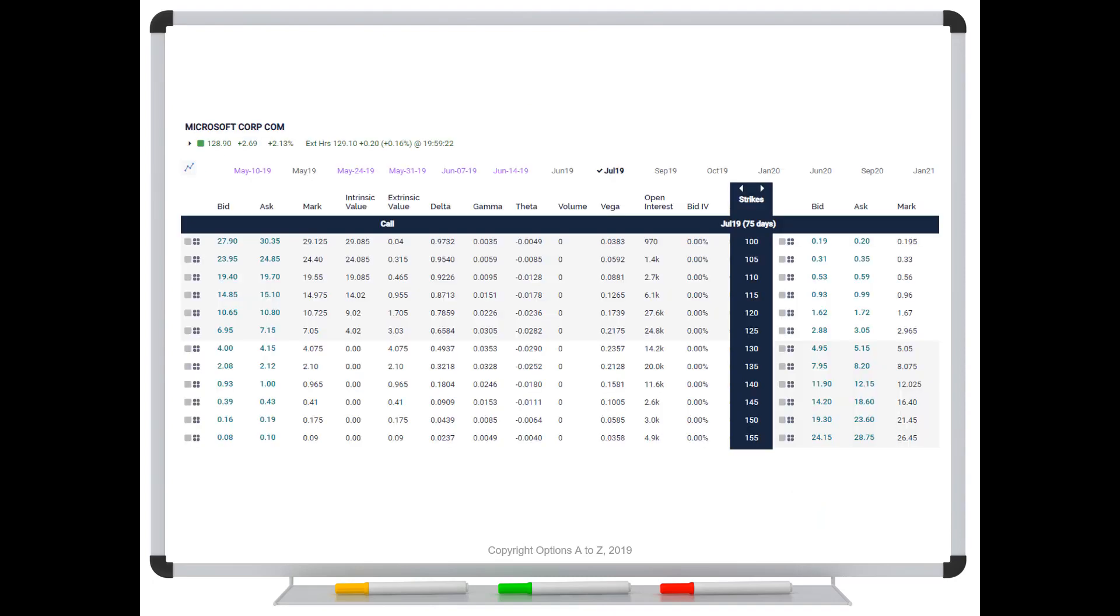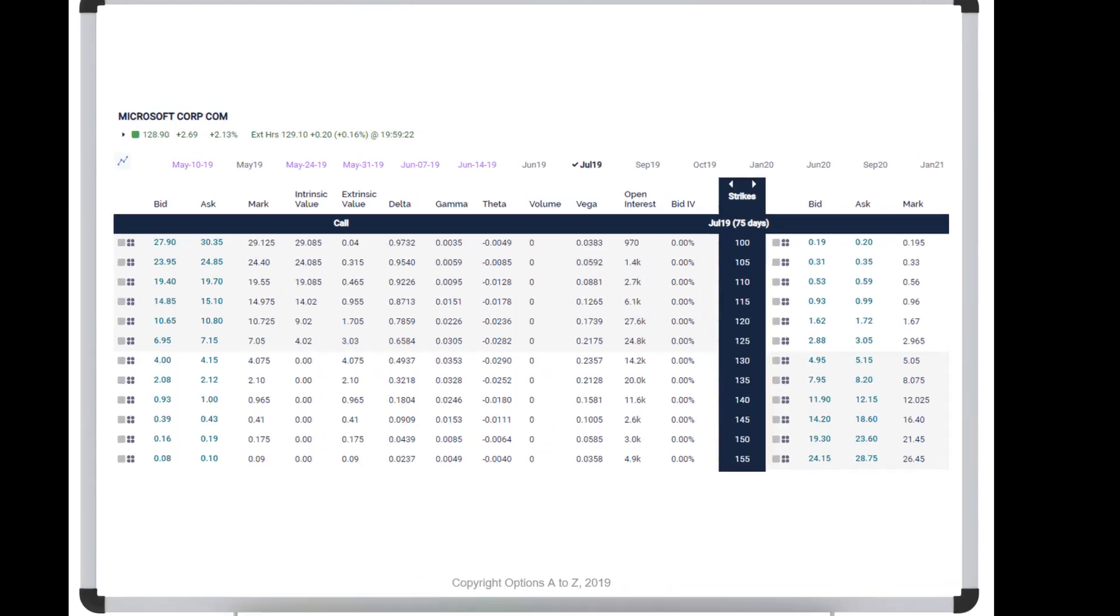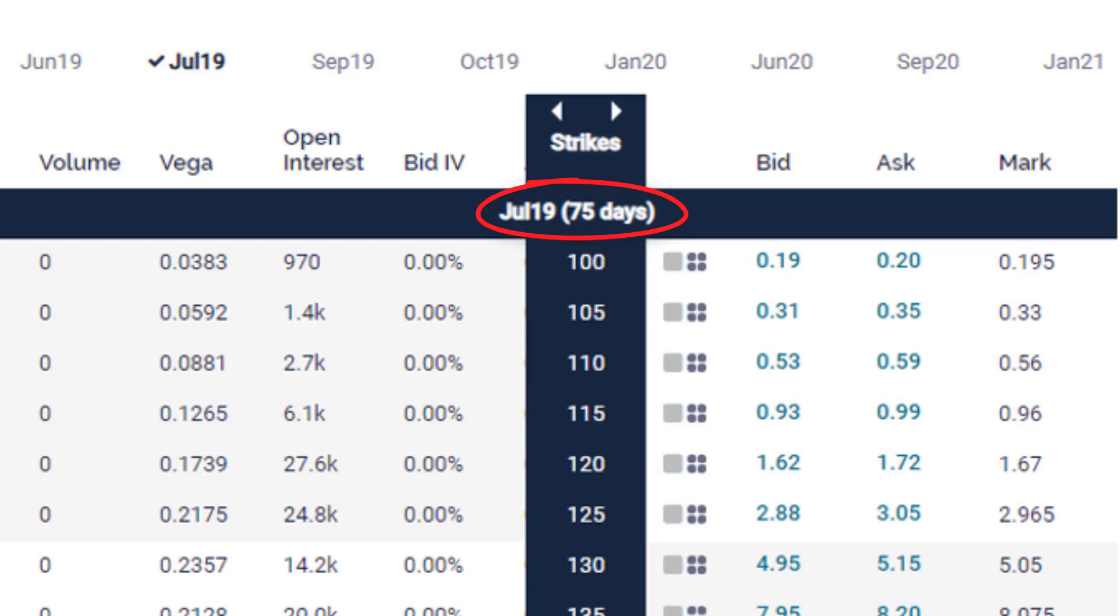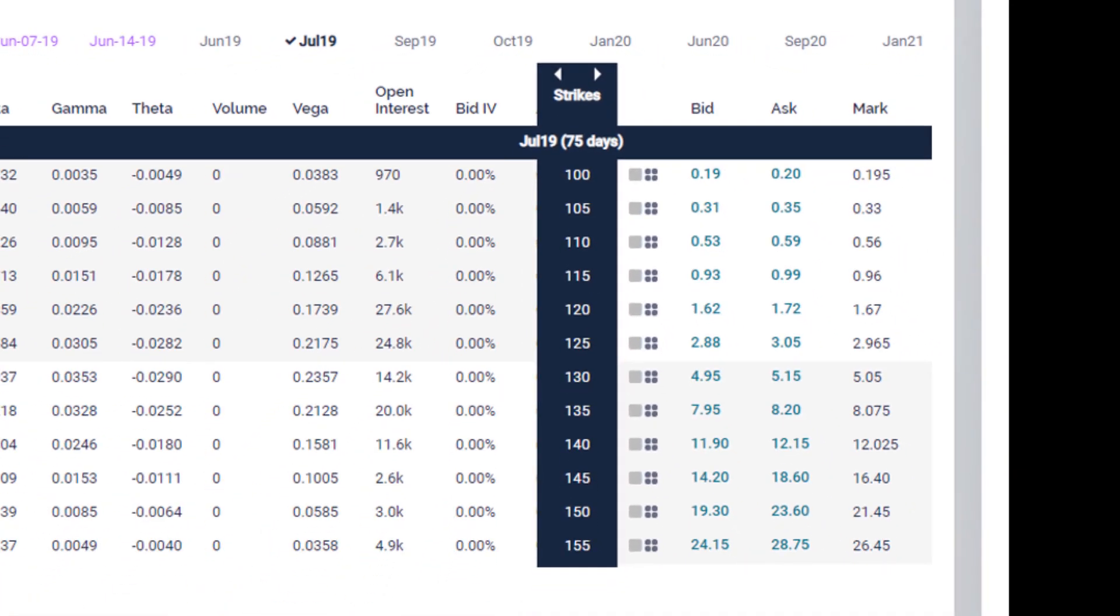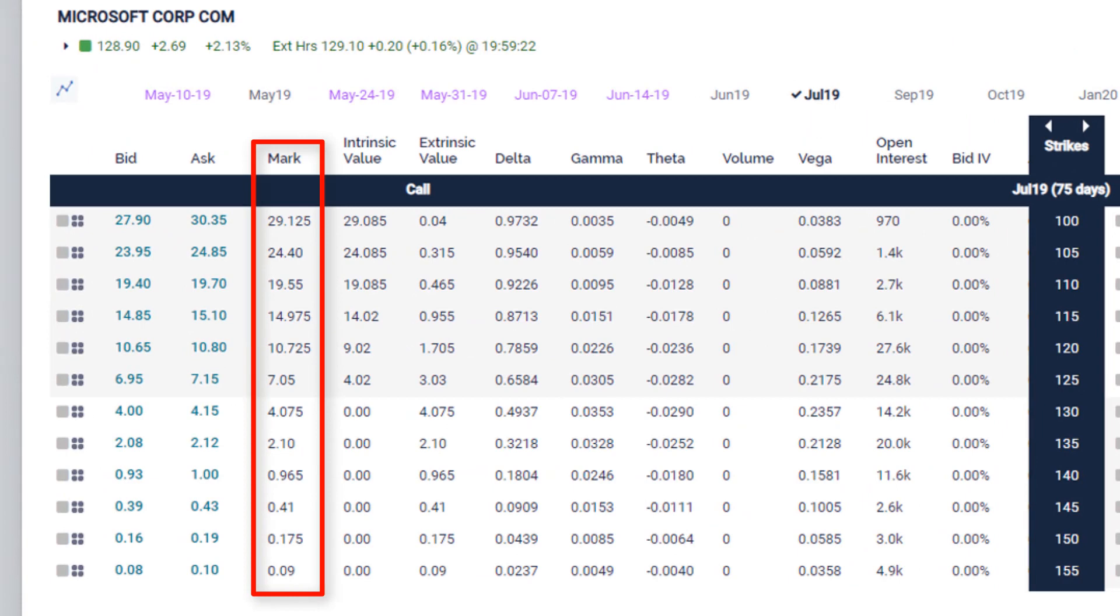It would force that May $50 call to trade at a higher value than the May $55. So it's this process of arbitrage that actually guarantees that these principles have to hold. So if you don't believe it, let's take a look. I've chosen Microsoft here, but choose any stock that you'd like or index. Choose any expiration date that you'd like. So here I've got the July 19 expiration. And you can see there's 75 days till expiration. But it doesn't matter. You can pick the weeklies, pick anything that you'd like. But take a look at the strikes down the center here. I've got the 100 strike on top, and they progressively get higher down to the 155 at the bottom. Let's first go over to the call options, and we're going to use the mark, which is the halfway point between the bid and the ask. So right here is our mark. And take a look at the 100 strike, trading for $29.12. But if we go to the 105 strike, it's $24.40. The next strike down is $19.55, $14.97, $10.72, $7.05, $4, $2, $0.96, $0.41, $0.17, and $0.09.